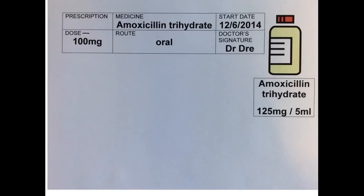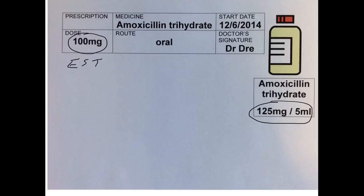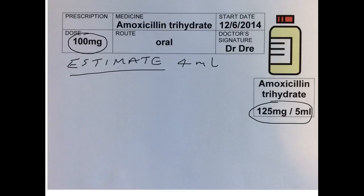So we're looking for a dose of 100mg, and the amoxicillin trihydrate is available as a syrup — 125mg per 5ml. It's always a good idea to estimate firstly how much. We know that we're looking for 100mg, and we have 125mg per 5ml syrup. So if we estimate, say, 4ml of syrup would be about enough. Let's try that as an estimate — we know it's going to be roughly something like that.